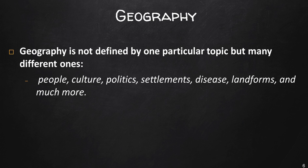Geography, unlike most other disciplines, is not defined by one particular topic. As we just discussed with homicide rates and the population distribution of Egypt, geography is concerned with many different topics — from people, culture, politics, settlements, plants, landforms, and much more. Most likely, none of these topics will be studied in isolation, because there is interaction and interdependency between them, as we saw in the homicide rate example.